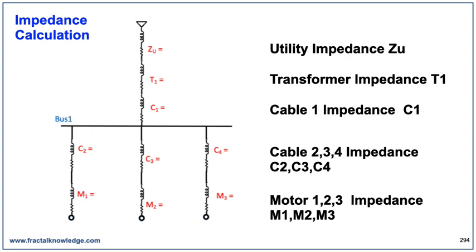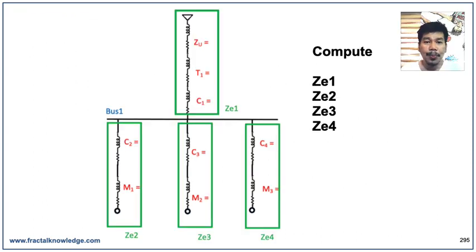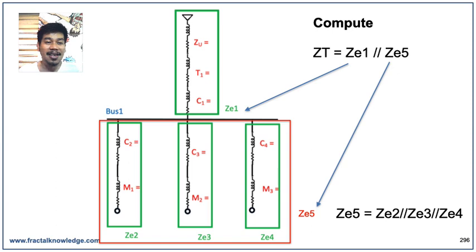Diagram as shown are the utility impedance Zu, transformer impedance T1, cable impedances Z1 to Z4 and motor impedances M1 to M3. You will compute for the following, but this is actually an example. So to compute if you have that kind of impedance diagram, you need to compute for the following equivalent impedance Ze1 to Ze4. All equivalent impedances are in series so you can use the series formula of Excel that I already taught a while ago.